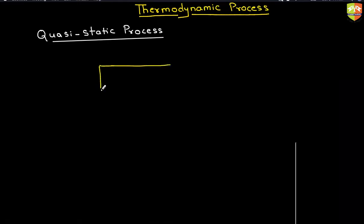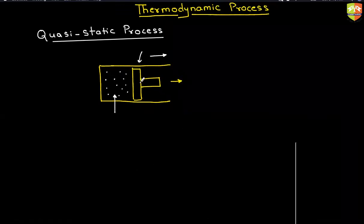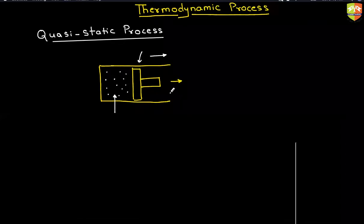Suppose you take a system in which you have a piston which can move. This piston can move this side, and the gas is there. So if you allow this piston to move very fast, then the gas inside it will not be in equilibrium, and then you cannot study it. So that is the reason why if you're moving the piston, you should move it extremely slowly so that the gas gets sufficient time to come into equilibrium. So that is why this is a quasi-static process.